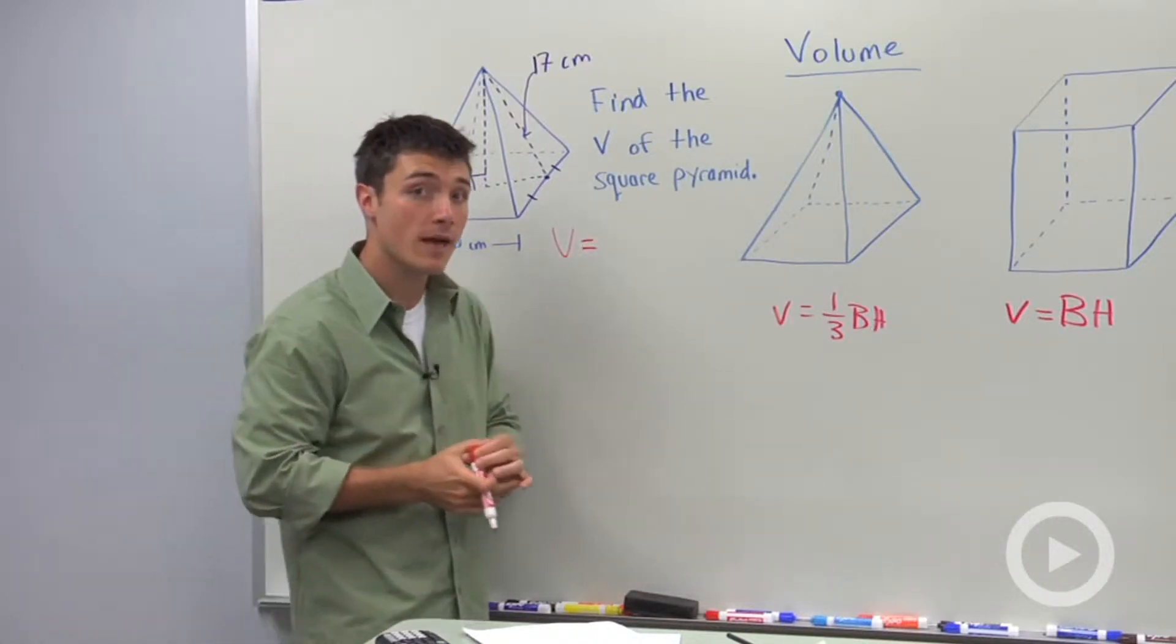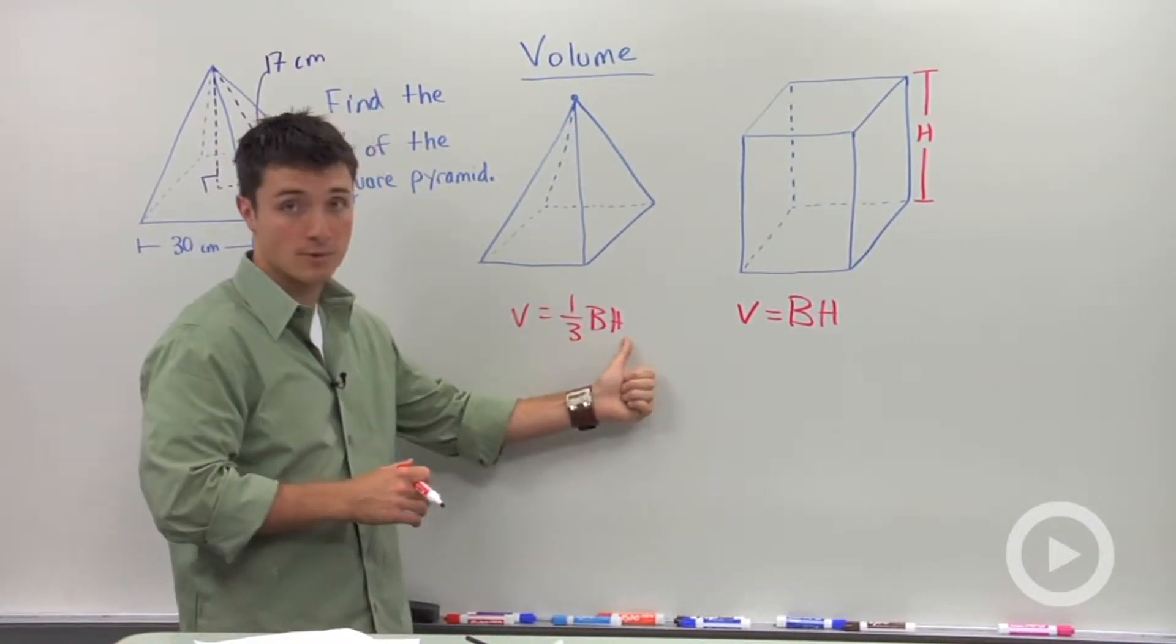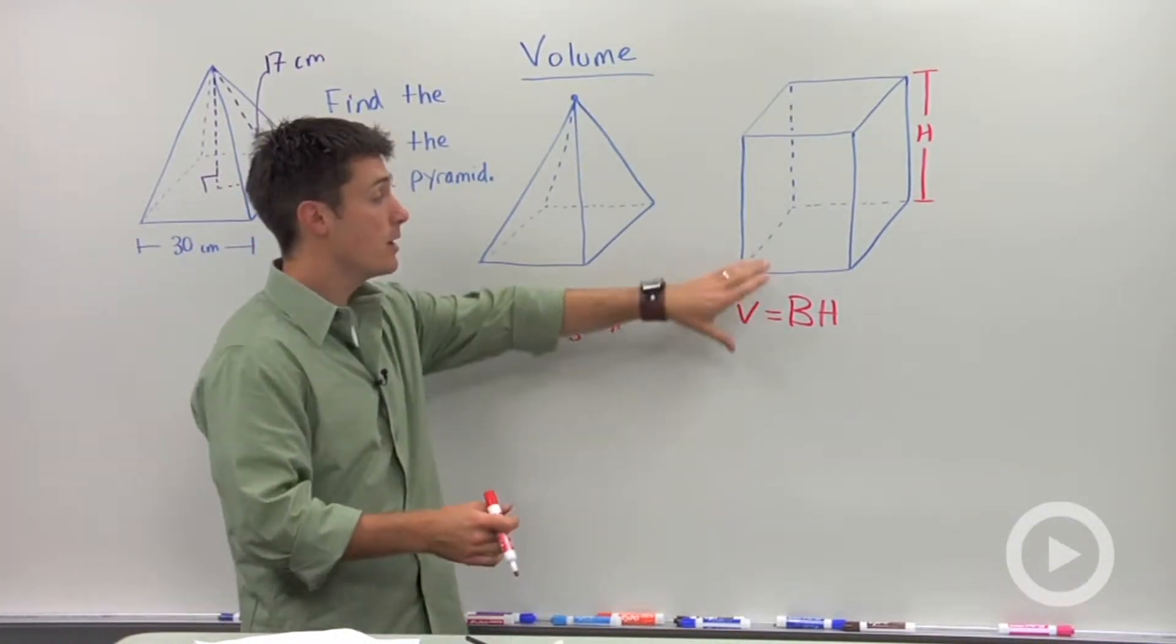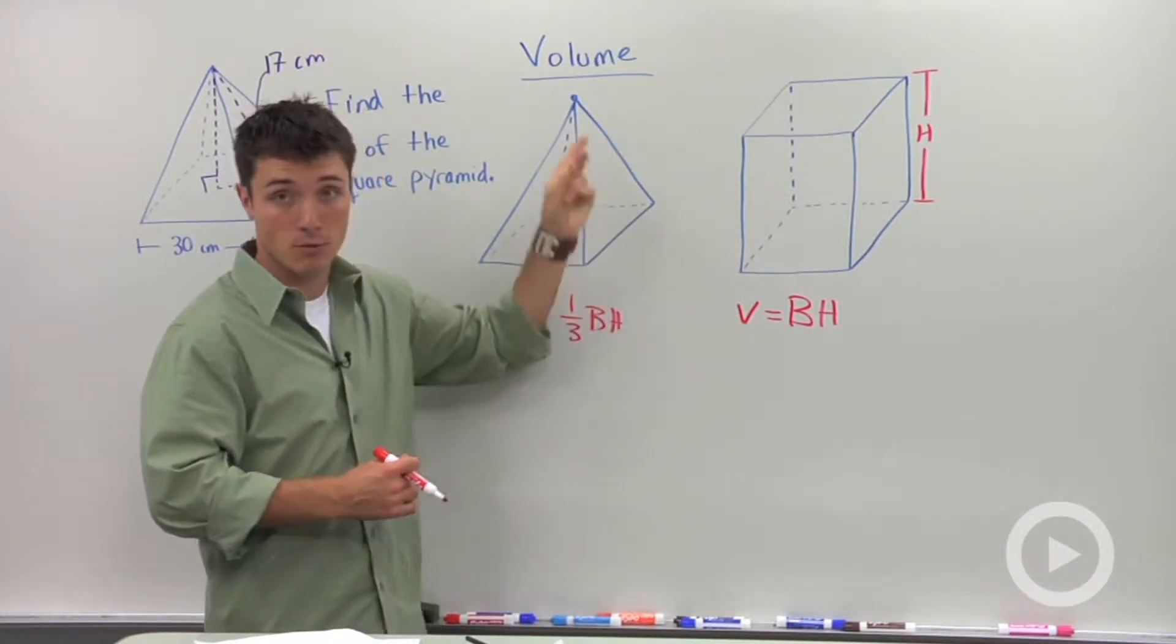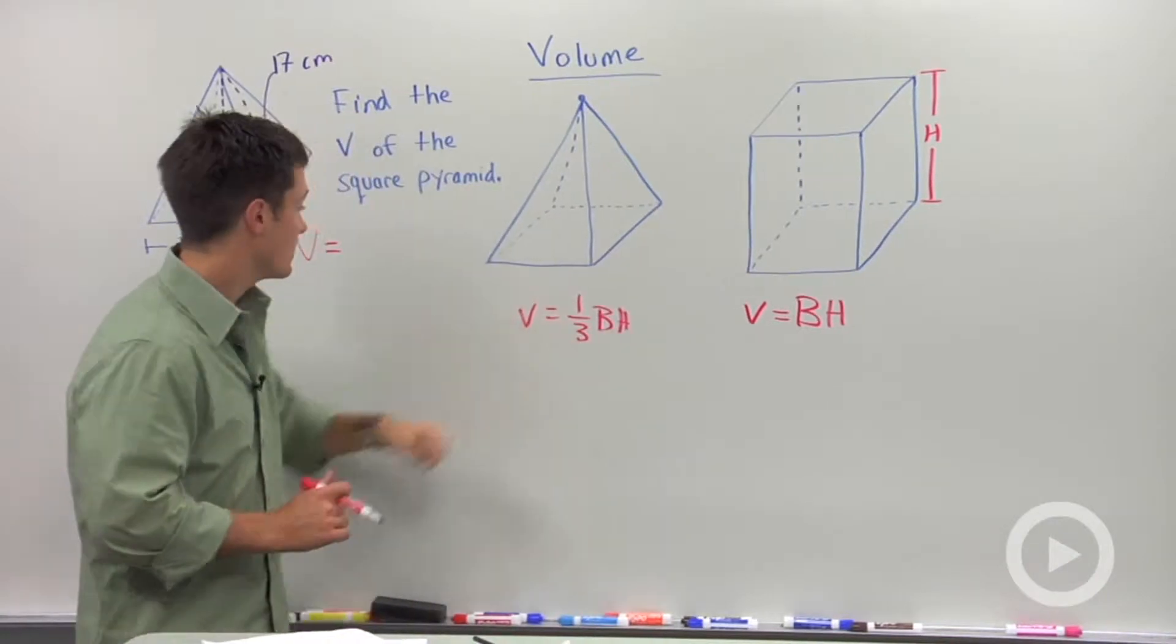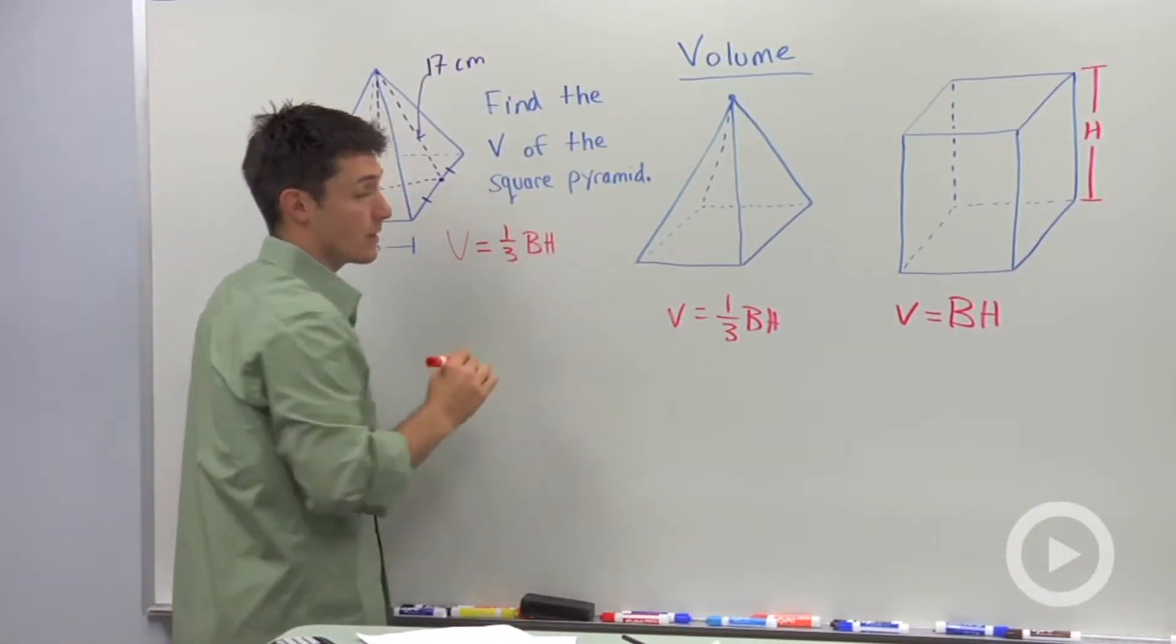We said that the volume of any pyramid is going to be one-third the base area times the height, which we related to the volume of a rectangular prism where the bases are congruent and the heights are both congruent.